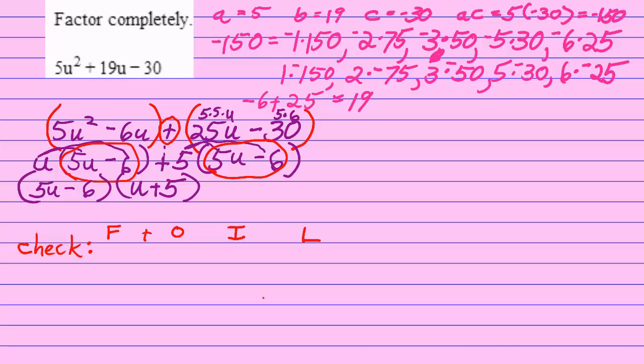I'm going to FOIL with understood plus signs in the middle, well between the letters. Alright, first: 5u times u is 5u squared. Outside: 5u times 5 is positive 25u. Inside: negative 6 times u is negative 6u, and Last: negative 6 times positive 5 is negative 30.